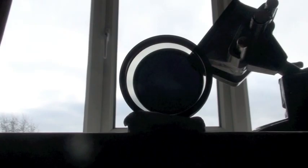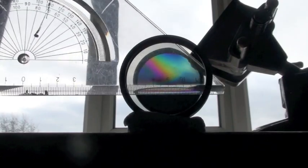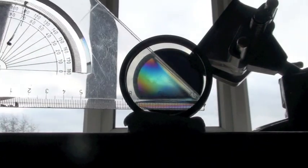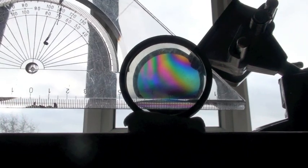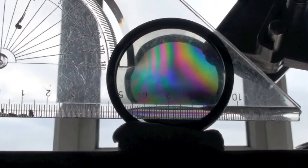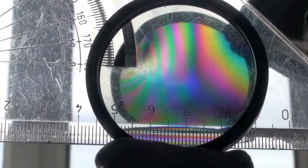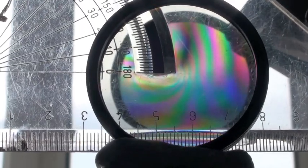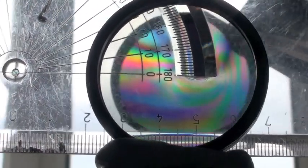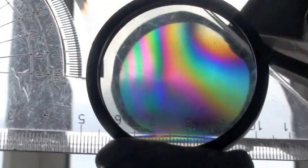If we arrange two crossed Polaroids so that they are dark, and then introduce a piece of perspex in between them, you can see the colored bands. Looking closely, these bands follow some of the contours on the perspex. For example, they are more densely packed around the cut point through the center of this protractor.